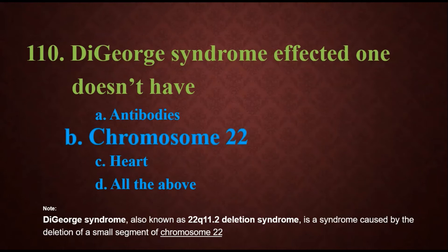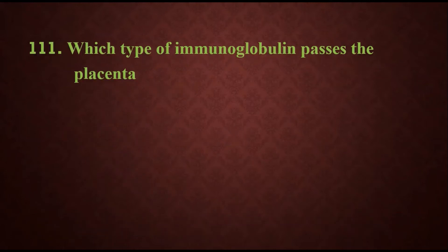Question 111: Which type of immunoglobulin passes the placenta? Obviously, the answer will be IgG, which we have already discussed. IgA is present in secretions, IgE is involved in hypersensitive reactions, and IgM is multivalent and the big immunoglobulin which appears in recent infections.